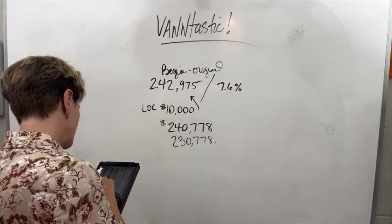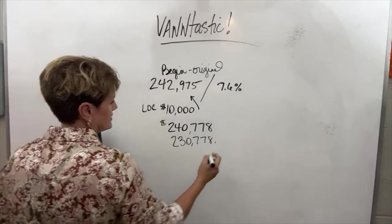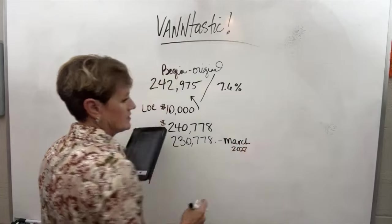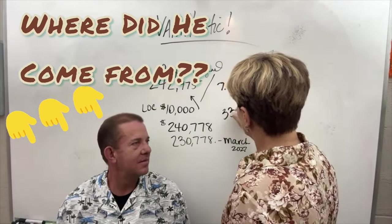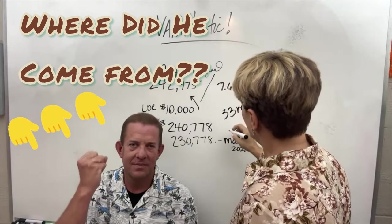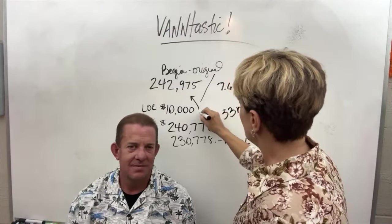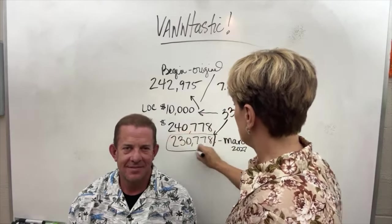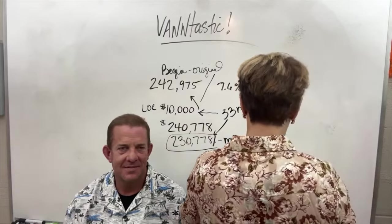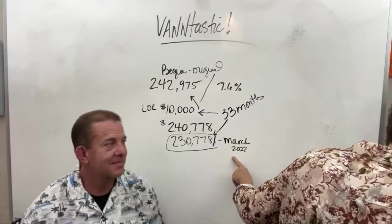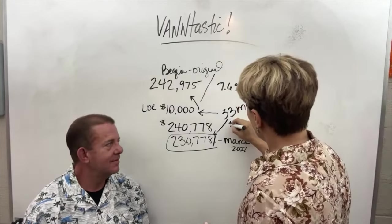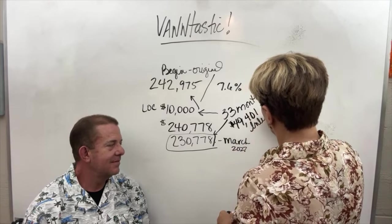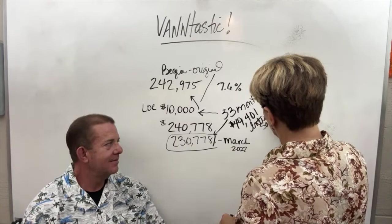And he's wanting to be at $230,778 approximately. So let's see what month gets him there. $230,887 would have him there in March of 2027 if he just made his payments. So it would take him 33 months to pay down $10,000 to get this balance to right here, 33 months, March 2027, which means that $49,401 in interest alone saved. Can you believe that?